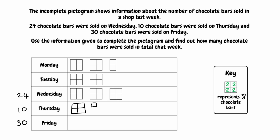For Friday we need 30. We know the big squares represent 8 chocolate bars each, so we'd have 8, 16, 24 — and then we'd have 6 left. So we don't need a full big square this time; we need 3 of the smaller squares. And that would be our pictogram for Friday.